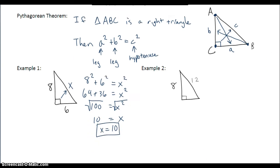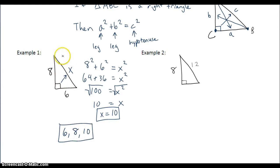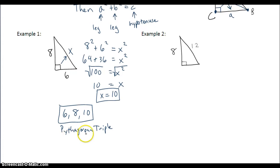So the sides of this triangle are 6, 8, and 10. Notice that 6, 8, and 10 are all three integers. If I plug 6, 8, and 10 into the Pythagorean Theorem, I'm going to get a true statement. When all three side lengths of a right triangle are integers, we form a Pythagorean triple. A Pythagorean triple requires that all three numbers be integers and that a squared plus b squared equals c squared is true.